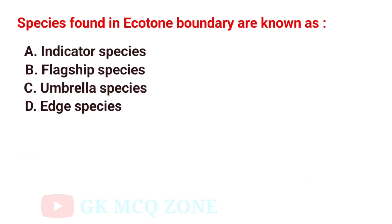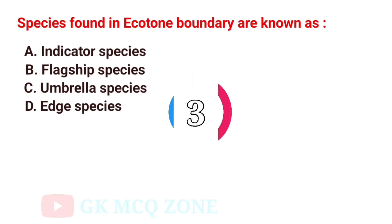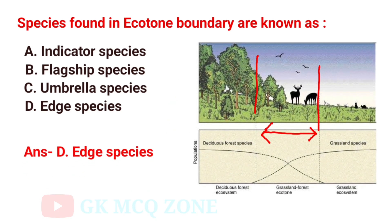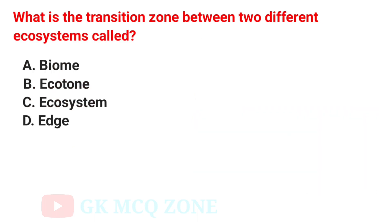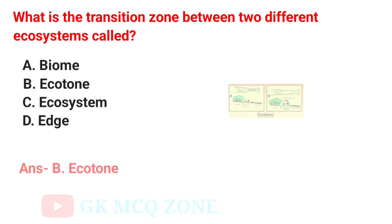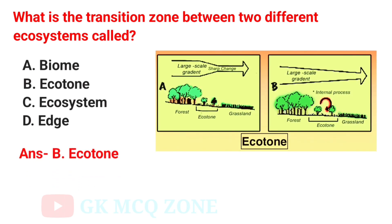Spaces found in ecotone boundary are known as — the correct answer is Option D: Edge Spaces. What is the transition zone between two different ecosystems called? The correct answer is Option B: Ecotone.